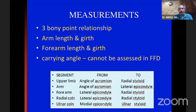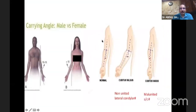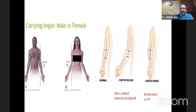For measurement: assess the three-point relationship by drawing a triangle and comparing with the opposite side. Measure arm length and girth, forearm length and girth, and carrying angle — which cannot be assessed if there is a fixed flexion deformity. Normal carrying angle: females have 10 to 15 degrees; males 7 to 10 degrees. It disappears on pronation or flexion. If less, it is cubitus varus; if more, cubitus valgus. Non-united or malunited lateral condyle fracture can lead to cubitus valgus; malunited supracondylar fracture can lead to cubitus varus.